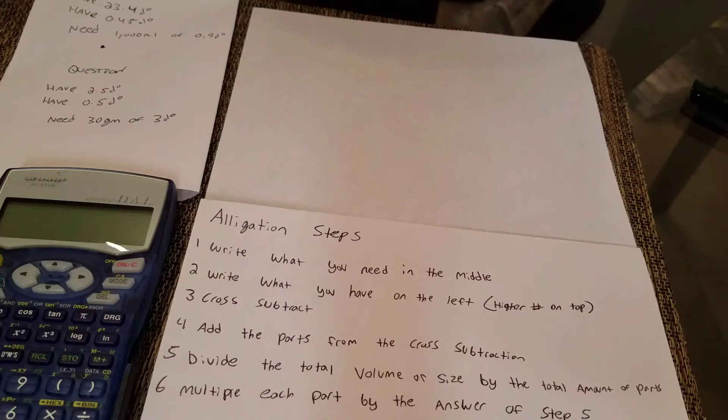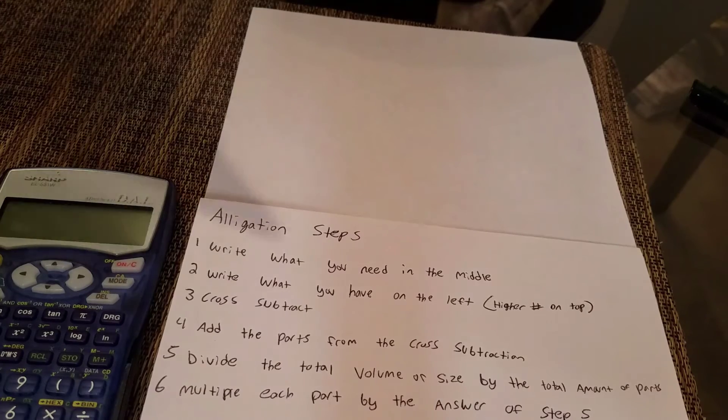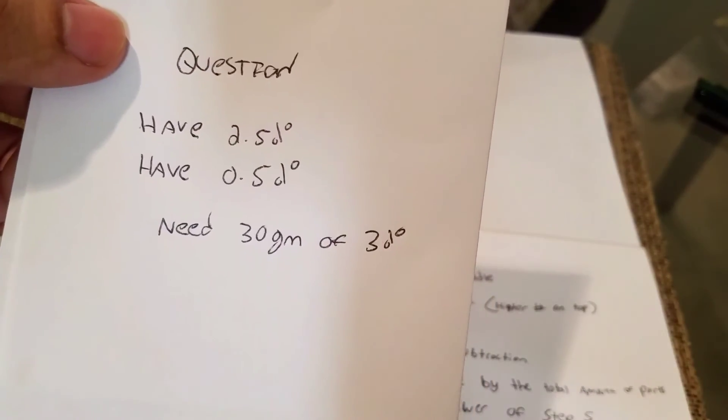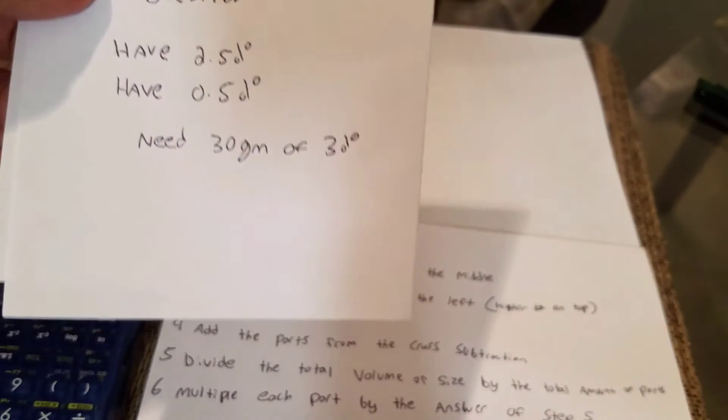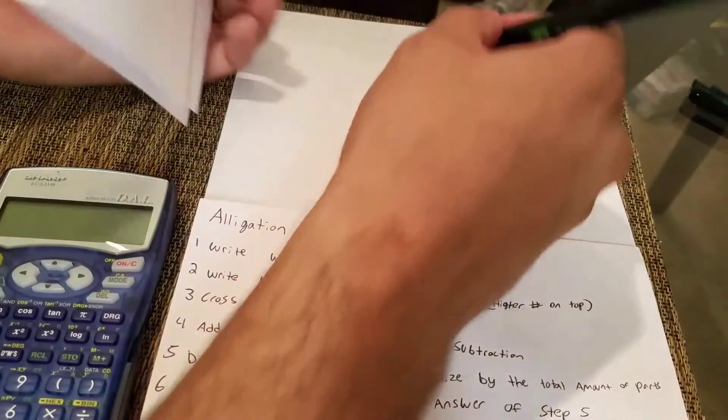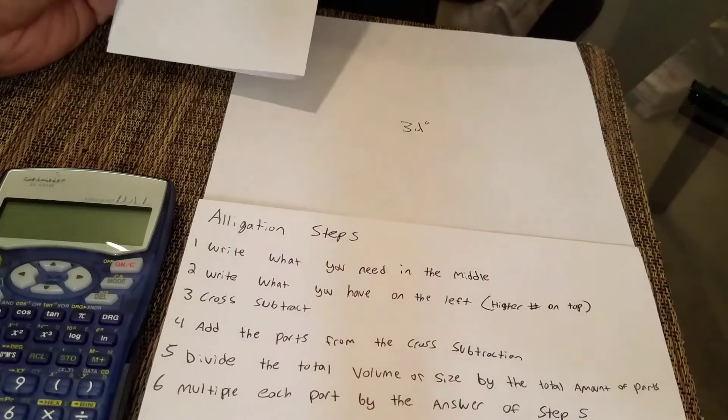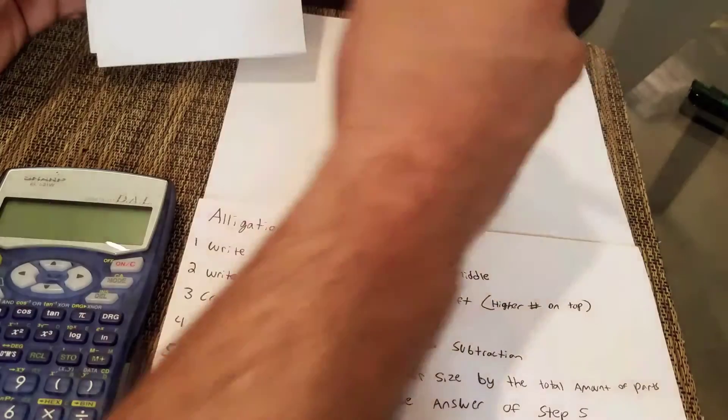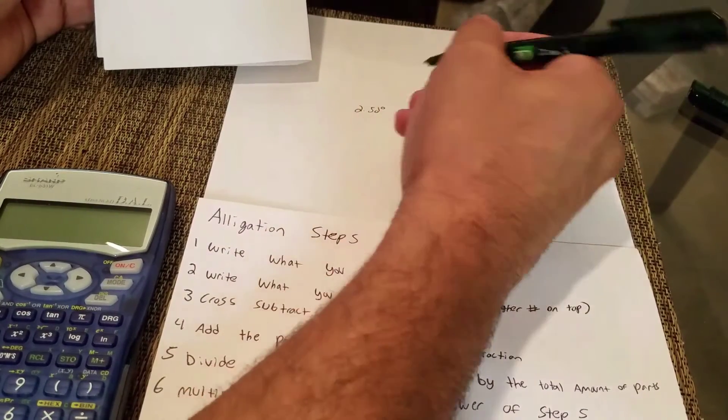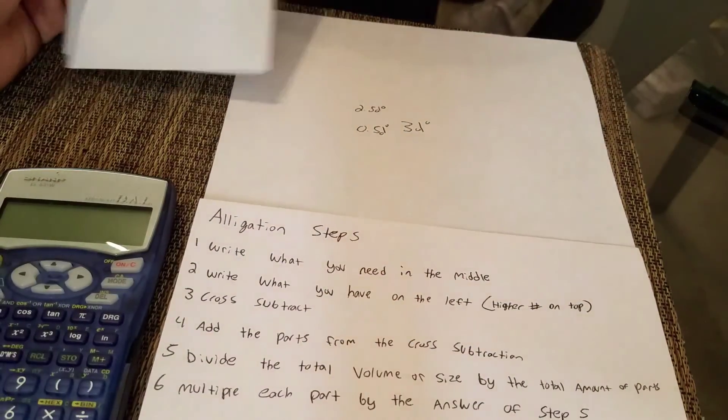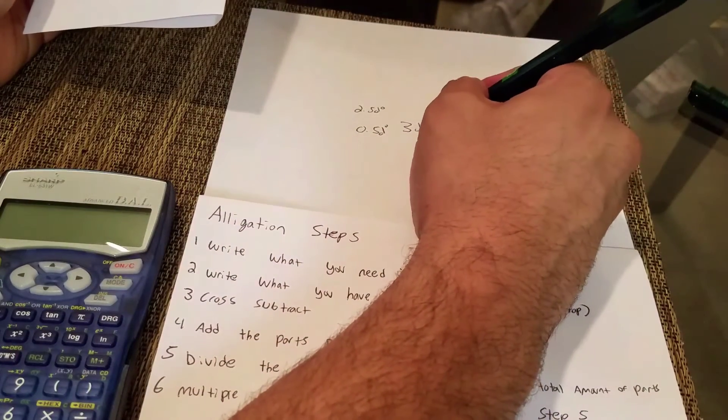I'm on to the next problem. The scenario is we've got to combine two creams, let's say two hydrocortisone creams. We've got to combine two different percentages to make 3%, and we need to make 30 grams of that. So what it says is write what you need in the middle. What do I need? I need 3%, so I'm going to write 3%. Then it says write what you have on the left with the higher number up top. So that's 2.5%, put that up top, and then I have the 0.5%. The next step is cross subtract. So I'm going to put 0.5 here.